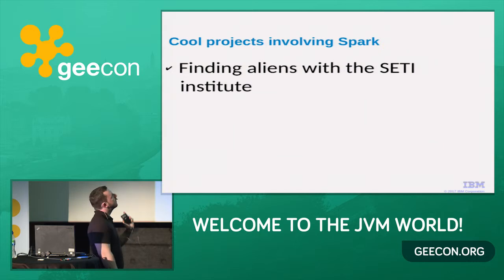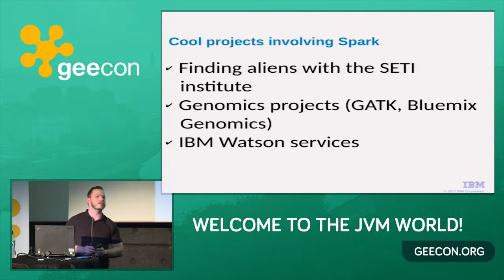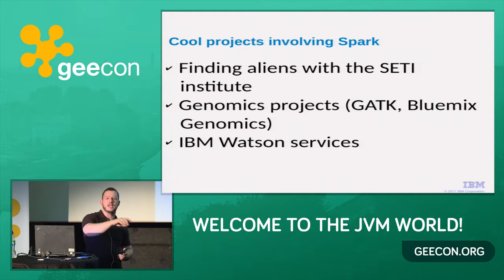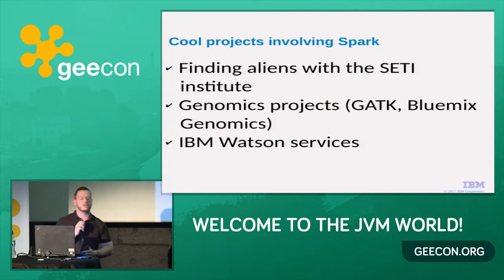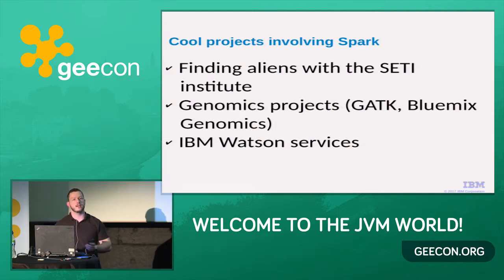There are a few pretty cool, pretty important projects. Finding aliens at the SETI Institute. Some genomics projects — there's a toolkit out there to do this, and also Bluemix Genomics, as well as a bunch of IBM Watson services. If you search for Apache Spark, IBM comes up — the idea is that you can have 20 different teams all around one lab all doing analytics, and if you improve Apache Spark, they all use Spark and get the benefit. That's what I've been doing in the runtimes team at IBM.